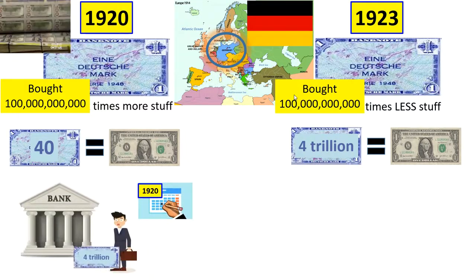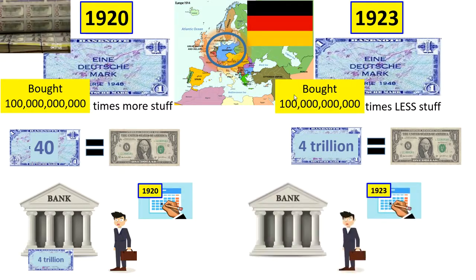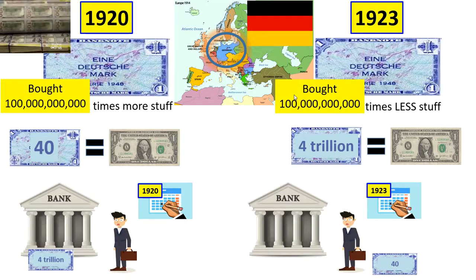Imagine in 1920 a super-rich person deposits 4 trillion Deutschmarks in the bank, then three years later walks in to take it out. The bank says: 'Here's your 40 Deutschmarks.' He'd say, 'Where is my $399,999,999,999,960 in Deutschmarks?' It's gone — it's inflation. Technically he would get 4 trillion back, but the 4 trillion would buy almost nothing.